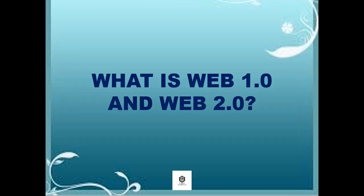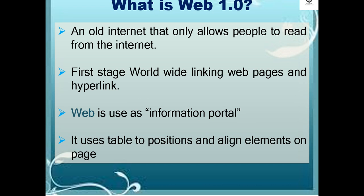What is Web 1.0 and Web 2.0? Web 1.0 is an old internet that only allows people to read from the internet. It is the first worldwide web linking web pages and hyperlinks, and is used as an information portal.